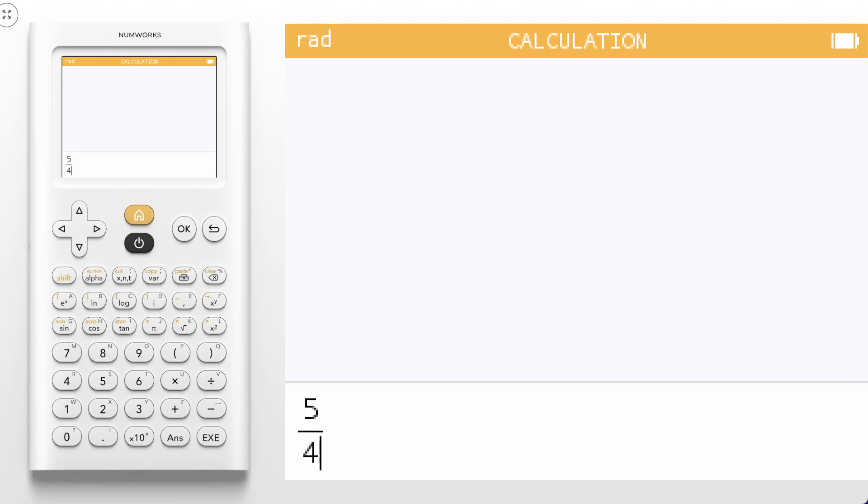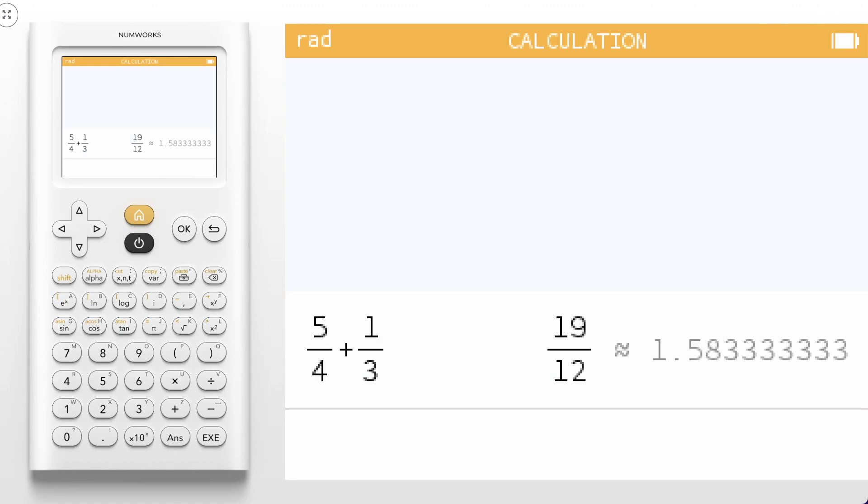Here we can add a couple values. I'll add 5 fourths and 1 third. Notice that we get both the exact result and the decimal approximation.